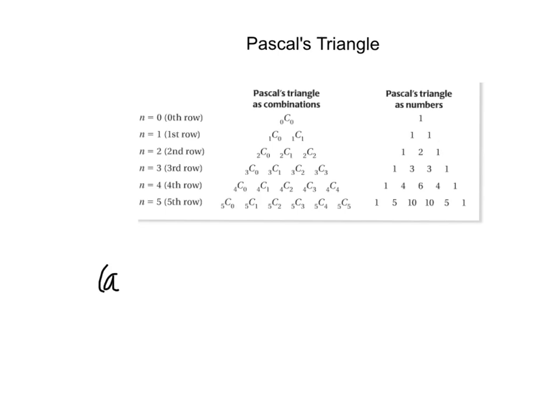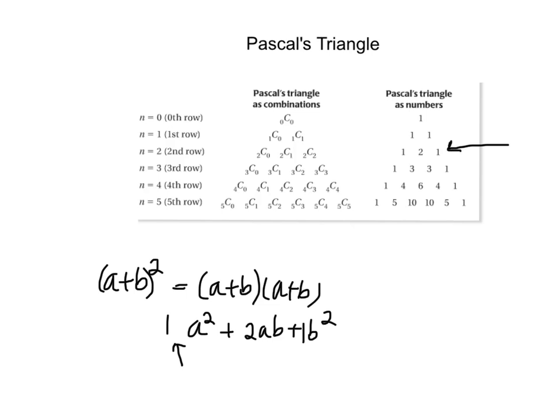Say we have A plus B squared. This is the same thing as A plus B times A plus B, and this becomes A squared plus 2AB plus B squared. These have the coefficients of 1, 2, and 1. You can see here that the 1, 2, 1 can be found in this row.